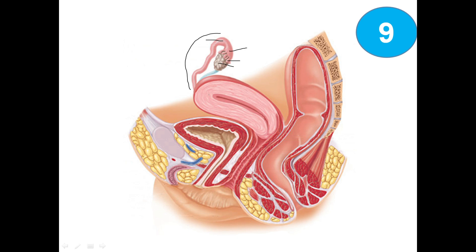Here we have the uterus, consisting of the fundus of the uterus, the body of the uterus, and the cervix. The walls of the uterus include the endometrium, myometrium, and perimetrium. We have the vagina, and anteriorly the urinary bladder and urethra, and posteriorly the rectum and anal canal.